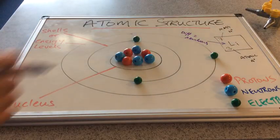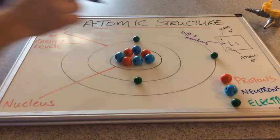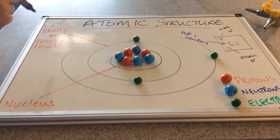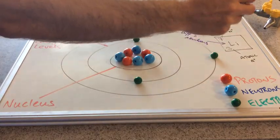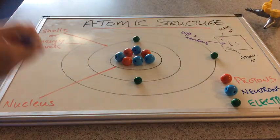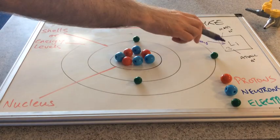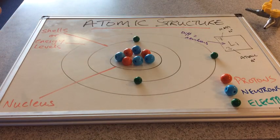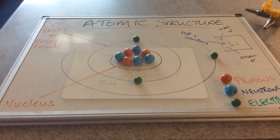So now, if you looked at something else, and we'll do an example in a moment, if I put some information on the board, you'd be able to look at those numbers and determine it's got that many protons, therefore that many electrons. The difference between those numbers tells you how many neutrons it's got. Simple.